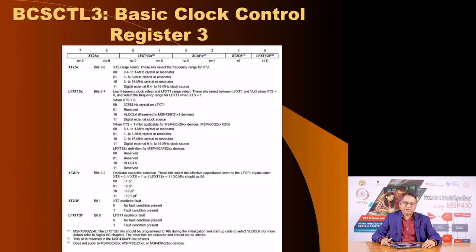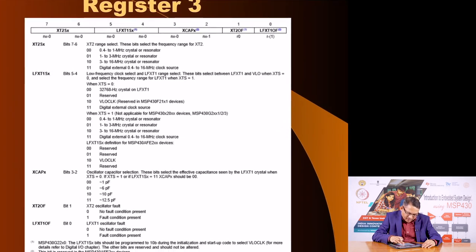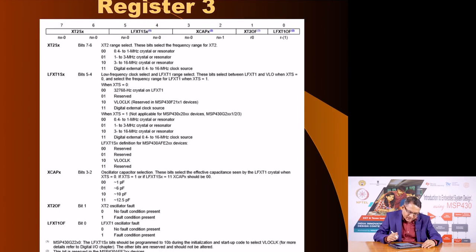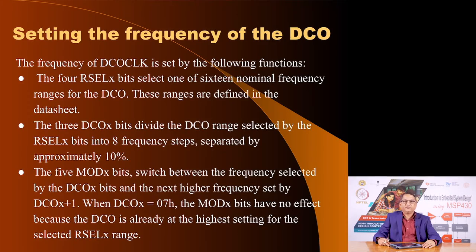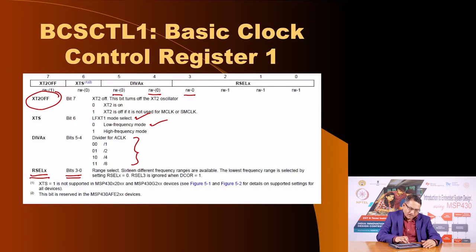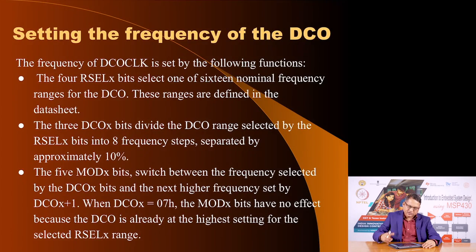The third register is the basic clock control register 3. Here the most important bits allow you to choose what sort of frequency crystal you want to use, and whether you want to use internal capacitance and what its value will be. To set the frequency of the DCO, you write into the DCO register as well as the basic clock control register 1. Based on the bits you write into these registers, as shown in the datasheet, you can change the frequency from 60 kilohertz to 16 megahertz.